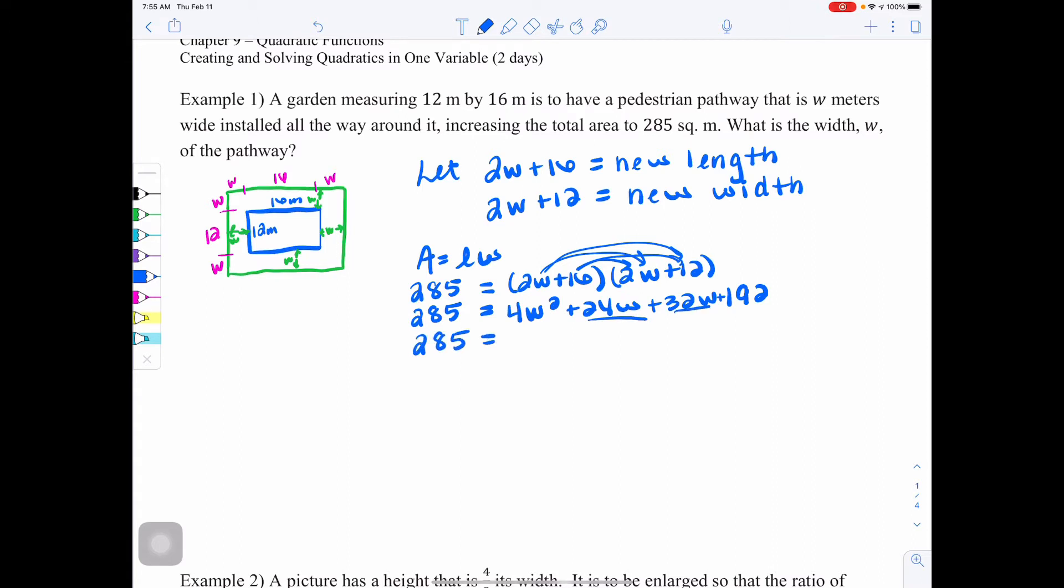So now when we combine these middle-like terms, we end up with 285 equals 4W squared plus 56W plus 192. So now that we've multiplied and simplified, we're to the point where we need to set our quadratic equal to 0. So we're going to need to move the 285 by subtracting it from both sides.